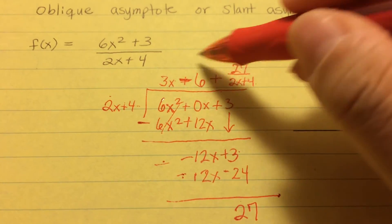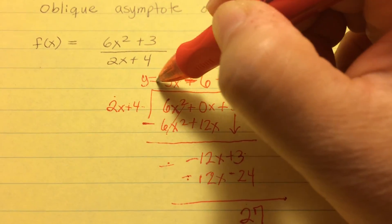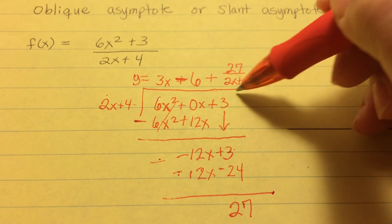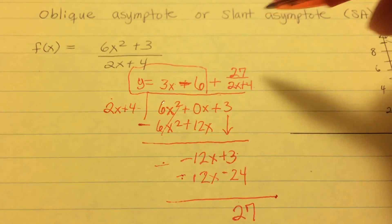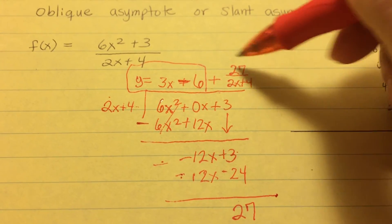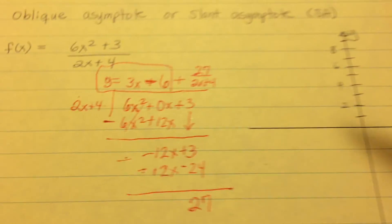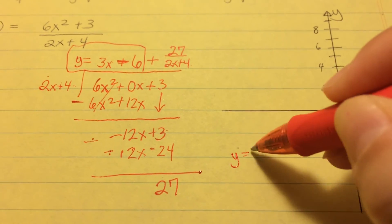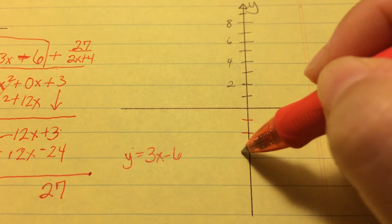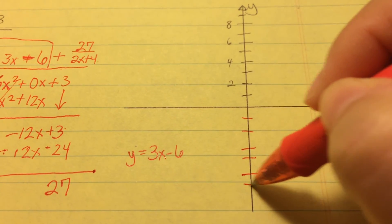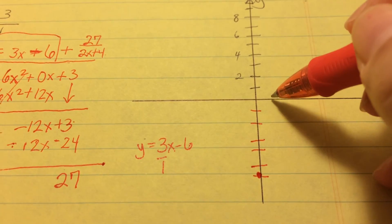When graphing the slant asymptote, we cannot graph remainders — we only graph the main quotient portion. The equation for the slant asymptote is y equals 3x minus 6. We start at negative 6 on the y-axis, then use rise over run: run 1, up 3. So from negative 6 we move to negative 3, then to 0, plotting points as we go.